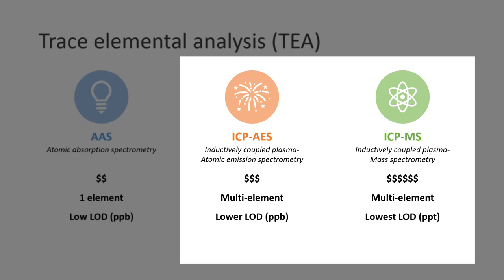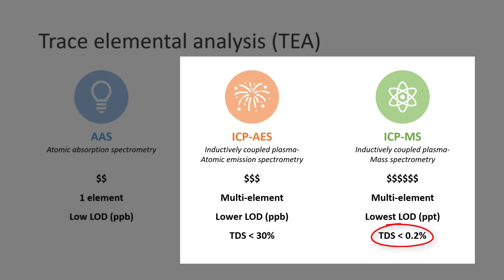So which one shall we choose? There is another practical consideration: the amount of total dissolved solid, or TDS. In general, ICP-AES has a higher tolerance for TDS, up to 30% depending on the instrument and accessories used. On the other hand, ICP-MS has a lower tolerance for TDS, lower than 0.2%. Therefore, sample dilution is often necessary for ICP-MS analysis. In this e-lecture series, we are going to focus on ICP-AES.